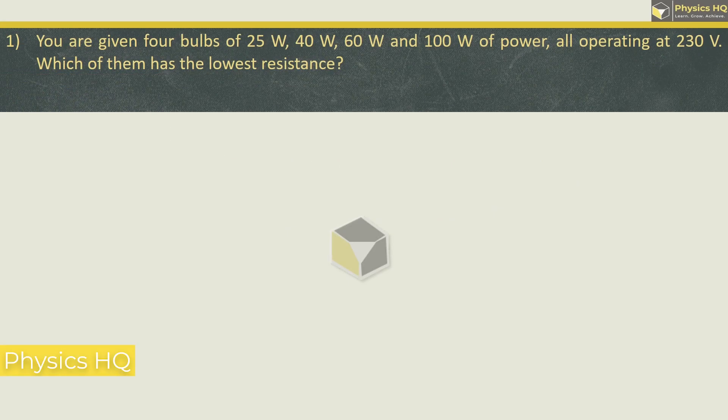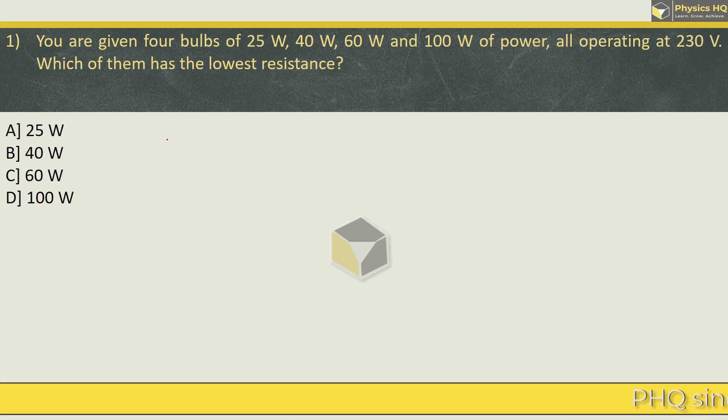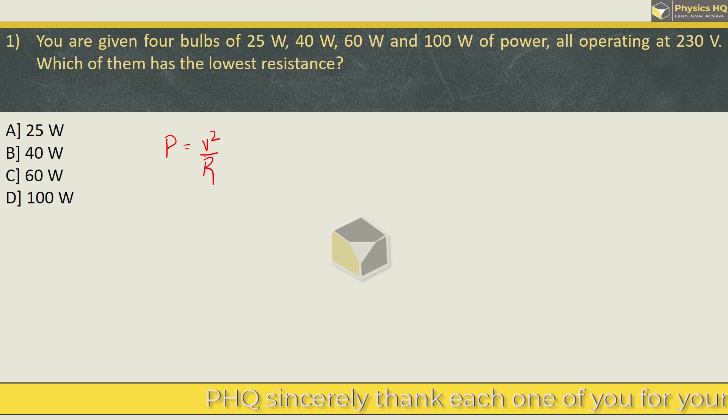Let us start with the first MCQ. You are given 4 bulbs of 25W, 40, 60 and 100W of power. All are operating at 230V. Which of them has the lowest resistance? So here we will relate power in terms of voltage and resistance. This is the formula: P is equal to V square by R.